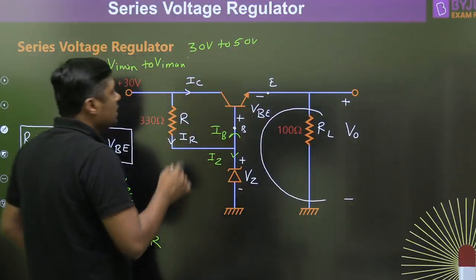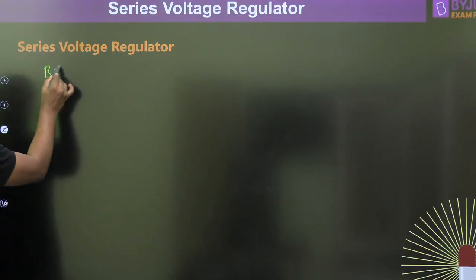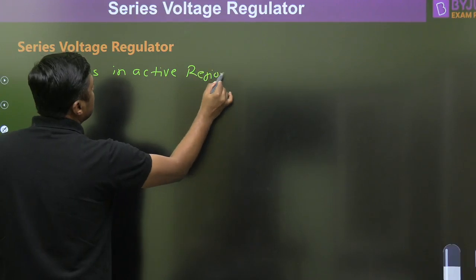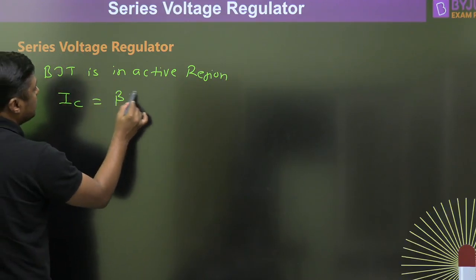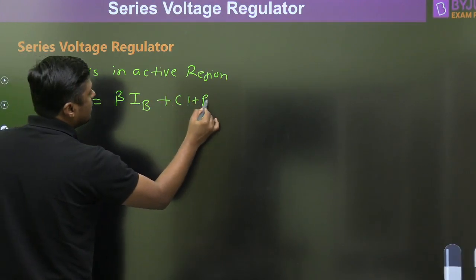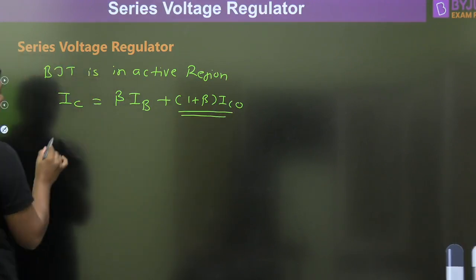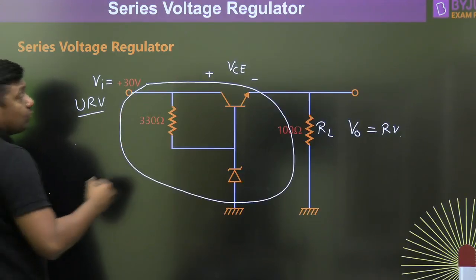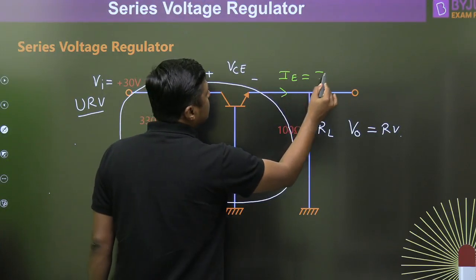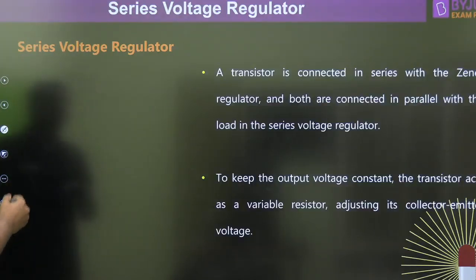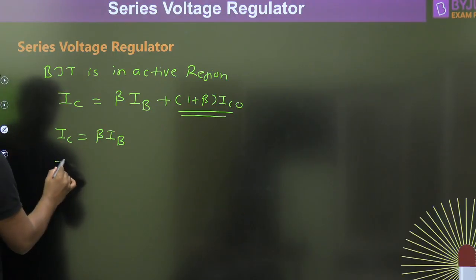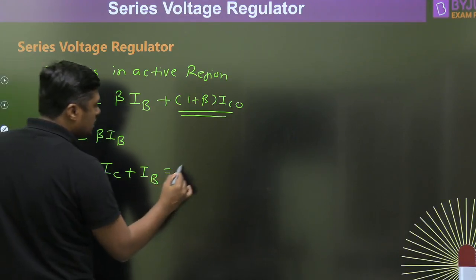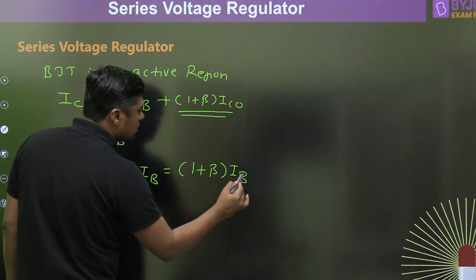Since the transistor is in the active region, the collector current is IC equals beta times IB (neglecting the reverse saturation current). The emitter current IE, which is also the load current IL, is given by IE equals IC plus IB, which equals (1 plus beta) times IB.